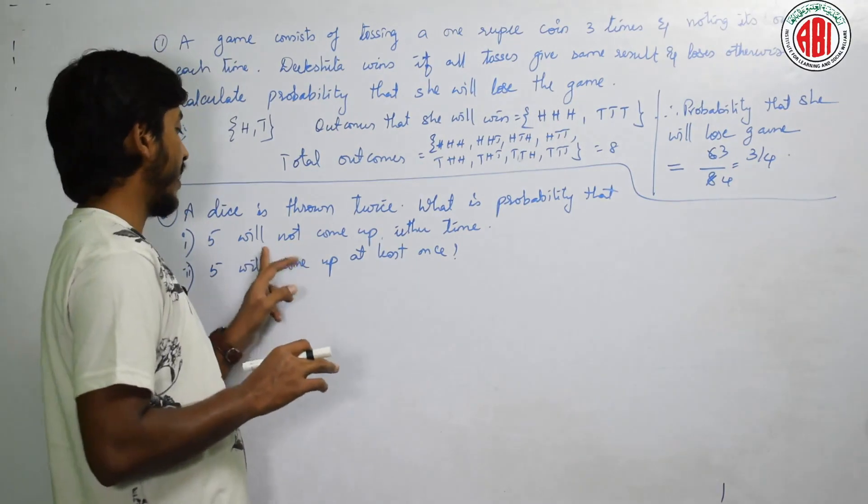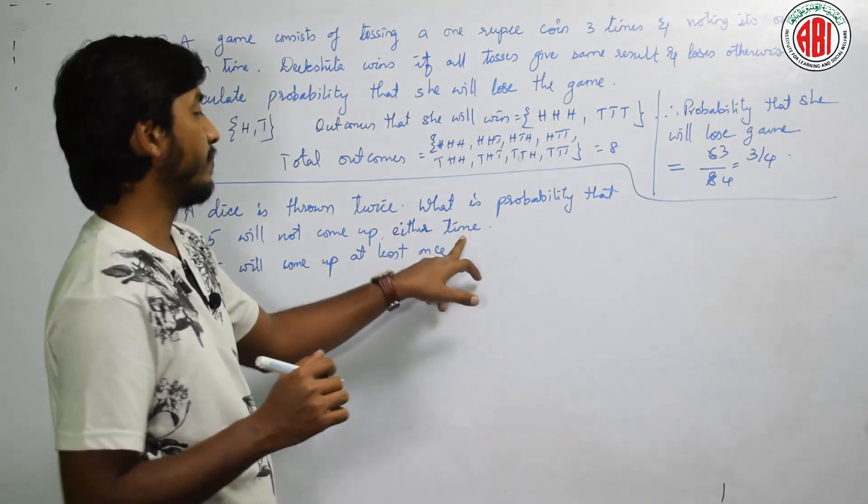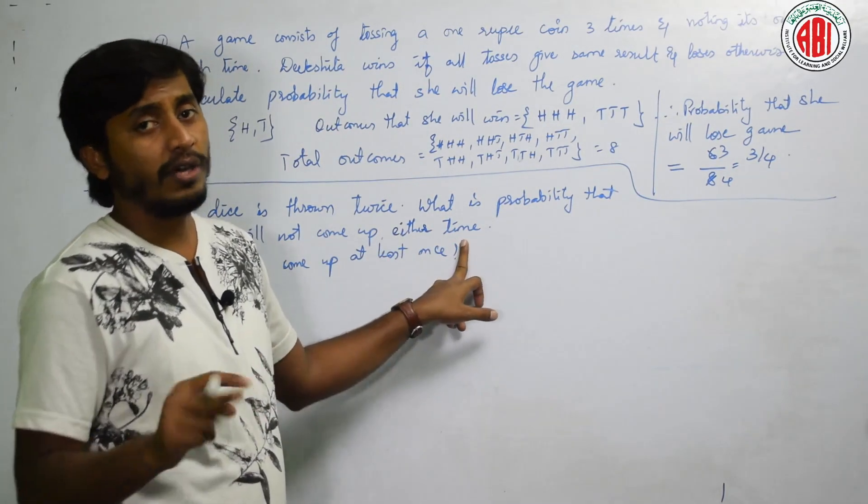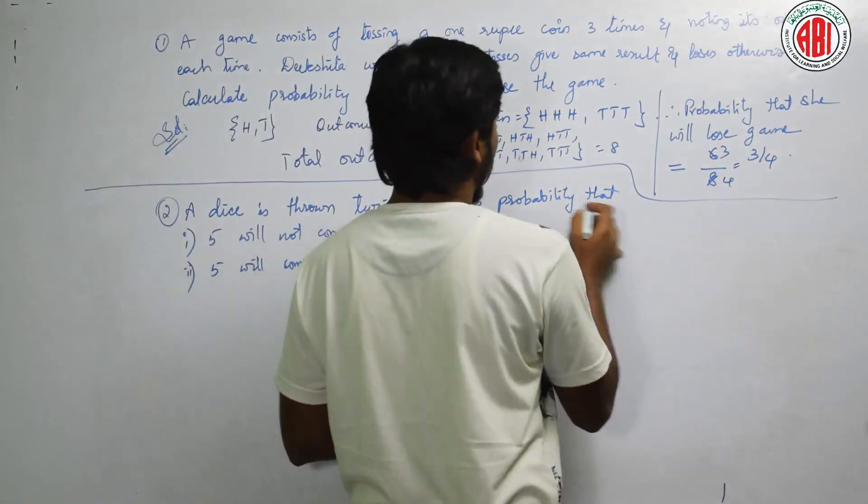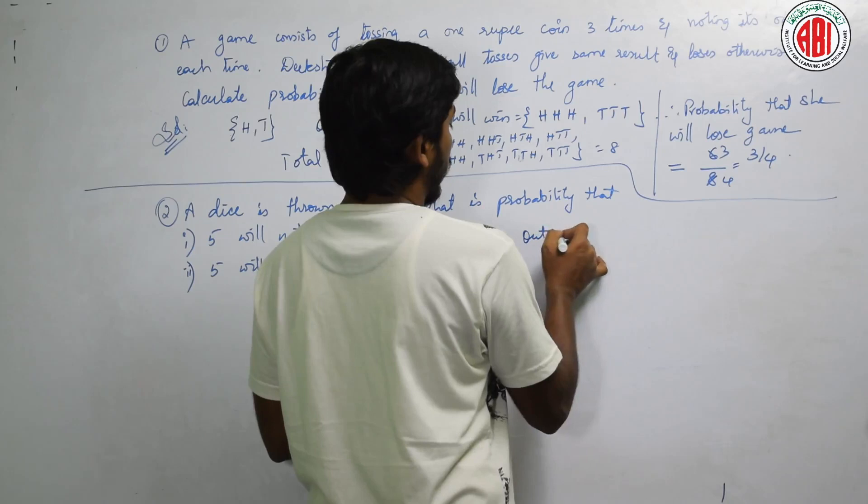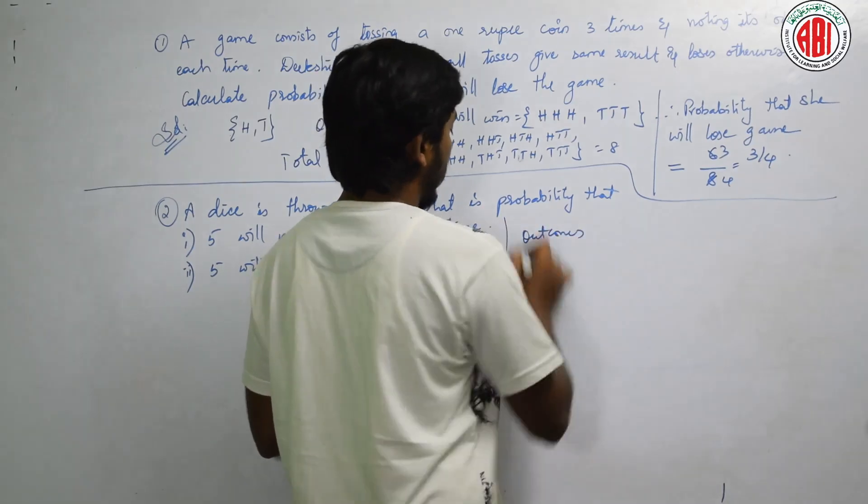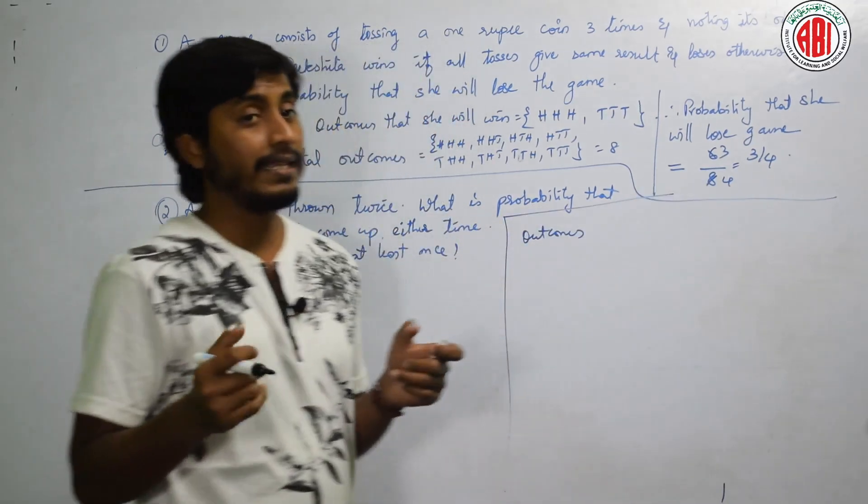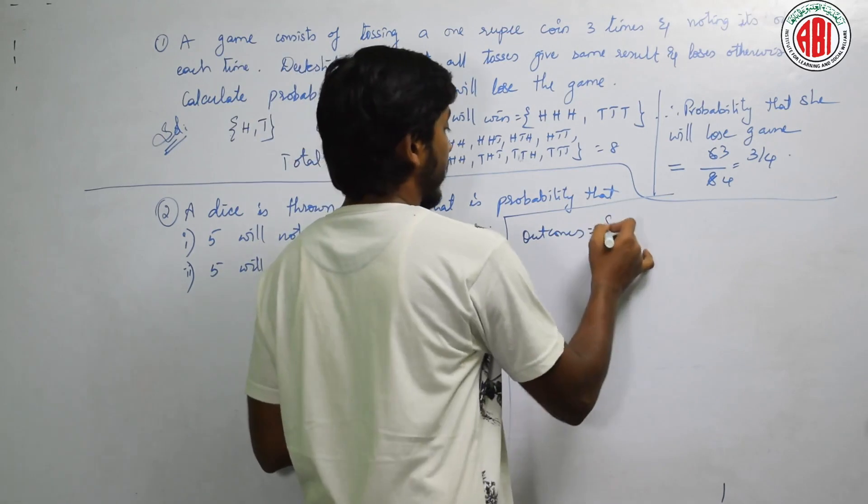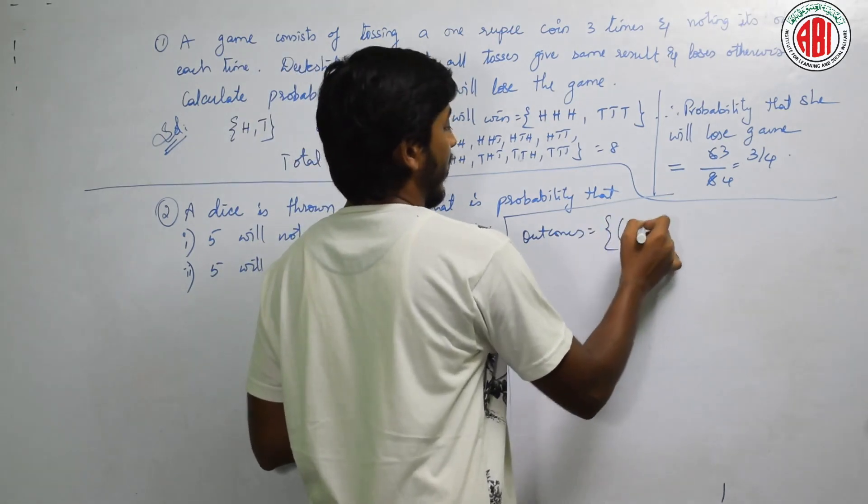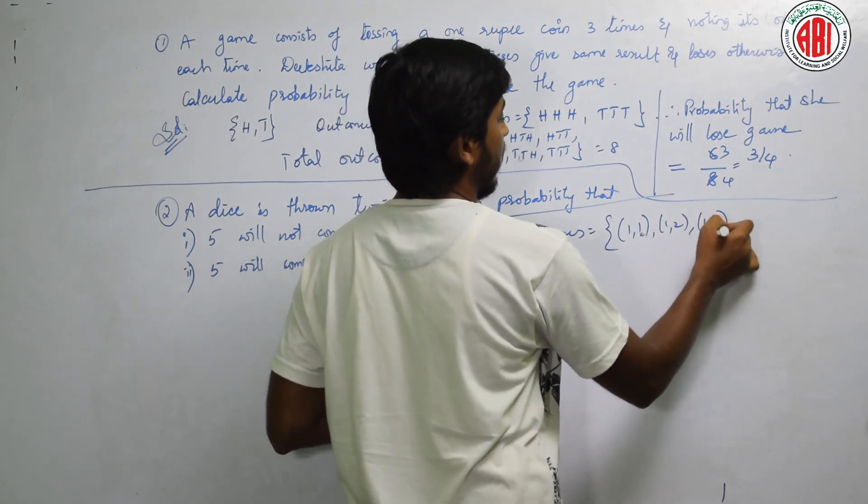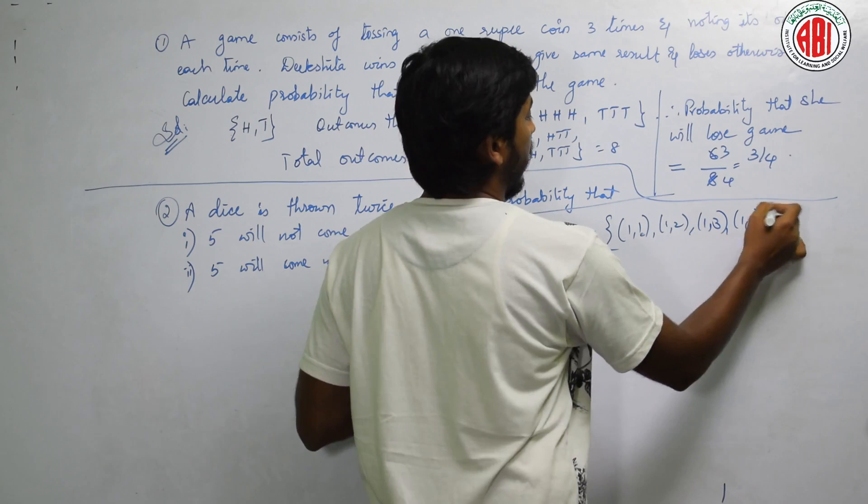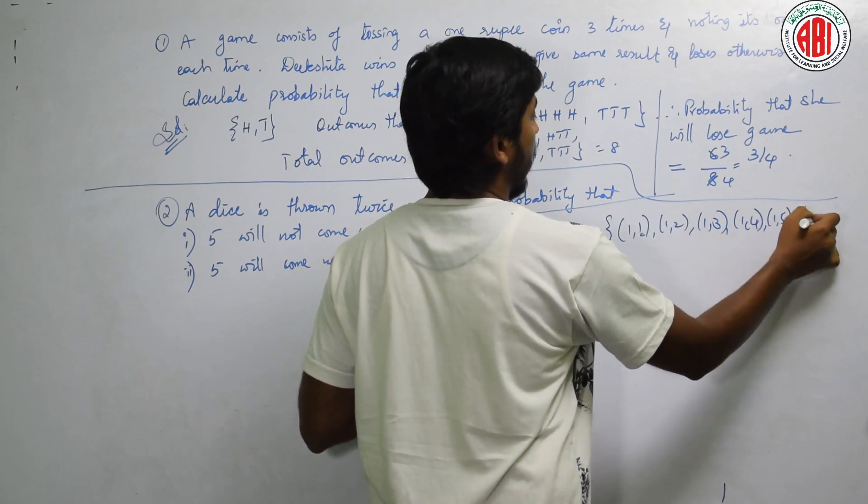Now what is the probability that 5 will not come up either time? What are the different outcomes when 2 dice are thrown? You have to remember this. That is, 1 dice: 1, 2, 3, 4, 5, or 6. We are throwing 2 dice.